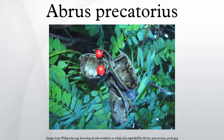It is a slender, perennial climber that twines around trees, shrubs, and hedges. It is a legume with long, pinnate leafleted leaves. The plant is best known for its seeds, which are used as beads and in percussion instruments, and which are toxic due to the presence of abrin.